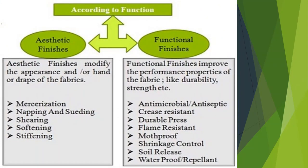According to performance or function, finishes are categorized into two types: aesthetic finishes and functional finishes. Aesthetic finishes modify the appearance, hand, or drape of the fabric. Examples are mercerization, napping, sueding, shearing, softening, and stiffening. Functional finishes improve the performance properties of the fabric like durability and strength. Examples are antimicrobial, crease resistant, durable press, flame resistant, mold proof, shrinkage control, soil release, and waterproof or water repellent finishes.